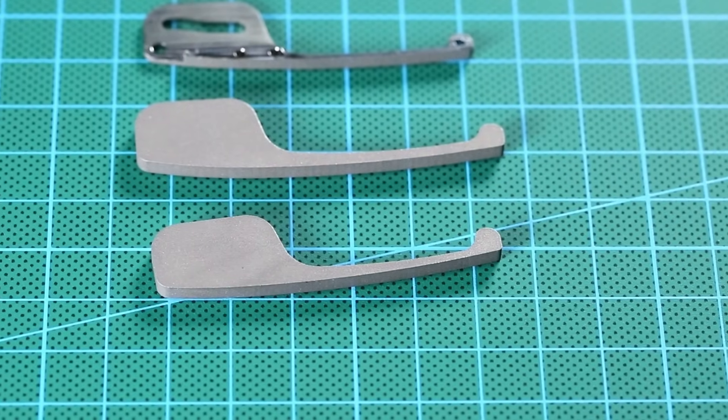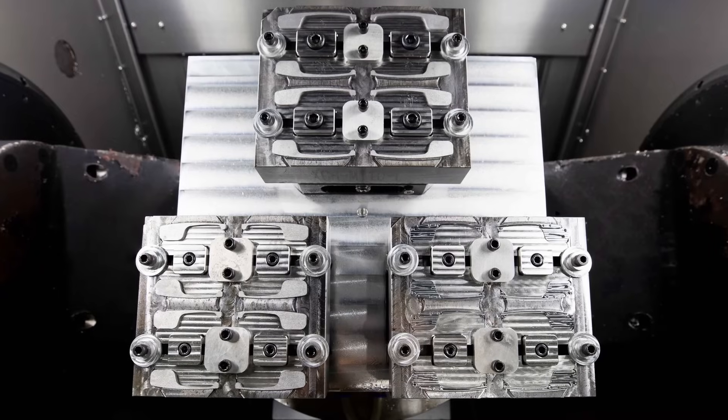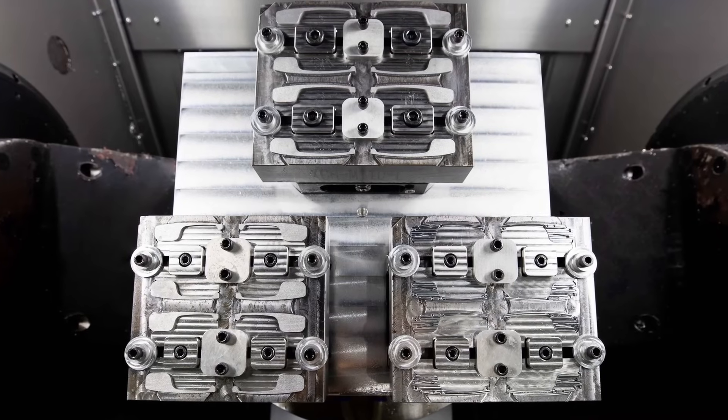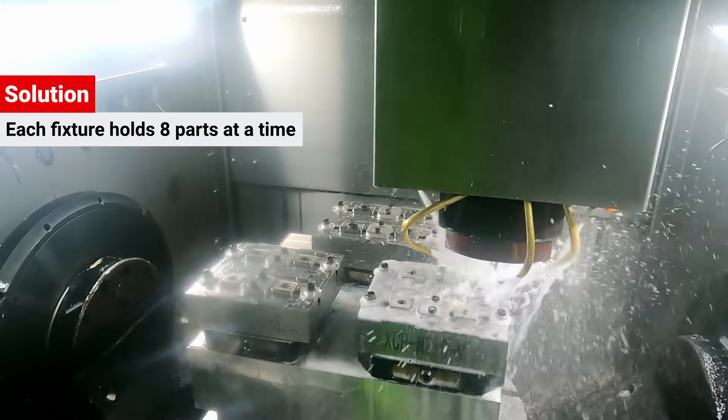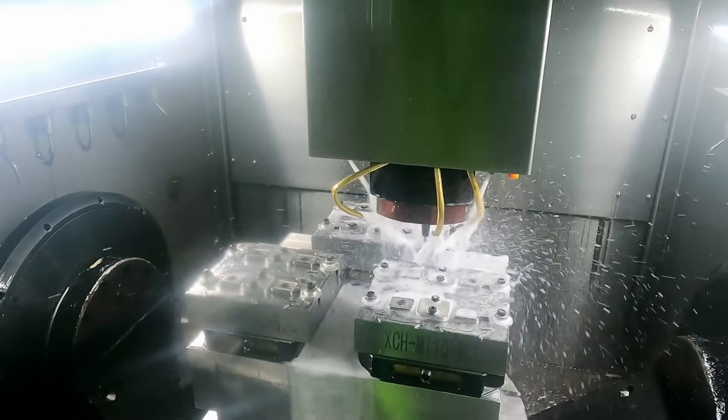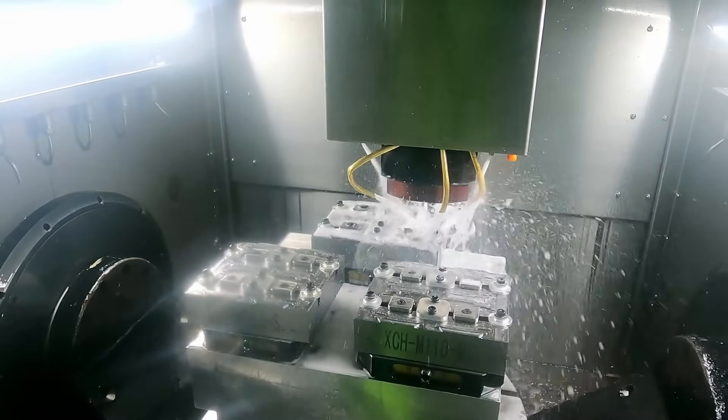We cut out the general profile shapes, heat-treated them, let them rest, then put the blanks into custom fixtures like this. As you can see, each fixture holds 8 parts at a time, and we can fit 3 of these tools onto the machine's work table to increase efficiency. That's 24 parts per machine in one setup.